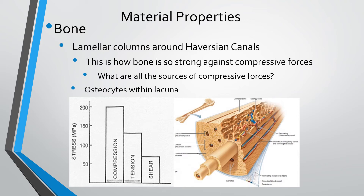Much of the reason relates to cortical bone construction — the relatively solid bone tissue on the outside. Cortical bone is arranged in columns with layers called lamellae running the length of the shaft. These columns are arranged around Haversian canals, where capillaries pass through, inside structures called lacunae. Within the lamellae are osteocytes — cells evolved from osteoblasts that maintain the bone tissue.